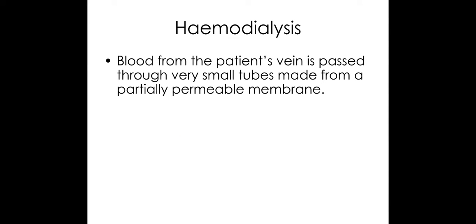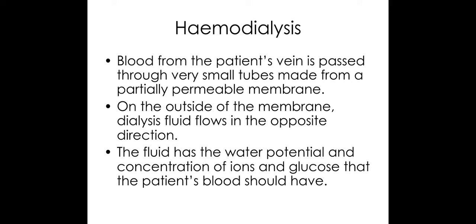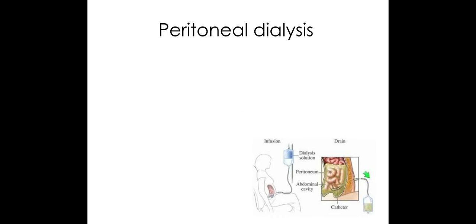The blood comes out from the vein and passes through small tubes made from a partially permeable membrane. Outside the membrane, the dialysis fluid flows in the opposite direction. Water potential is used to adjust the water concentration of the blood and to maintain the correct glucose concentration.